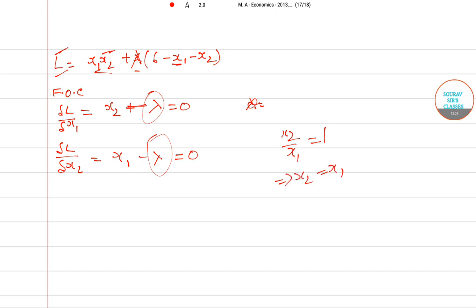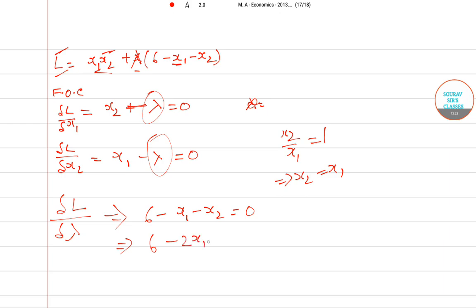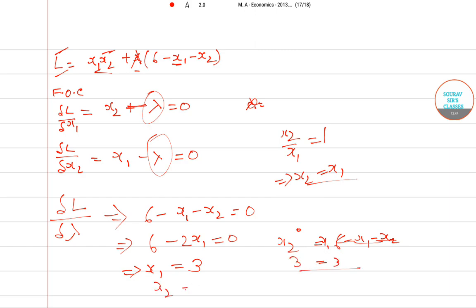Since x2 equals x1, differentiating the Lagrange with respect to lambda gives 6 minus x1 minus x2 equals zero, so 2x1 equals 6, meaning x1 equals 3. Since x2 equals x1, x2 also equals 3. Therefore the utility is maximized when x1 equals 3 and x2 equals 3.